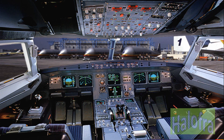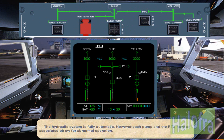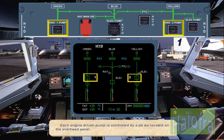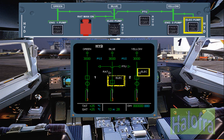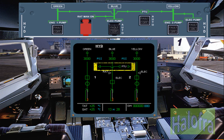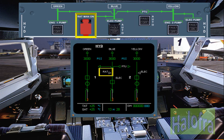The hydraulic system is fully automatic. However, each pump and the PTU have an associated push-button switch for abnormal operation. Each engine-driven pump is controlled by a push-button switch located on the overhead panel. Each electrical pump is controlled by a push-button switch. The PTU is controlled by a push-button switch. The RAT may be extended manually by using this guarded push-button switch.